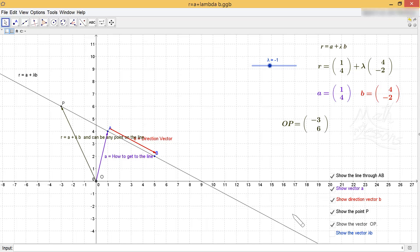And that gives me this vector from O to P, which is given by this vector (-3, 6). So if we think about it, it's going to be (1, 4) which is A minus one lot of B. So if you do minus one times 4, you'll get -4. Add that to 1 gives you -3. And then you do minus one times -2, that gives you 2. Add that to 4, you'll get 6. So the vector P is (-3, 6).